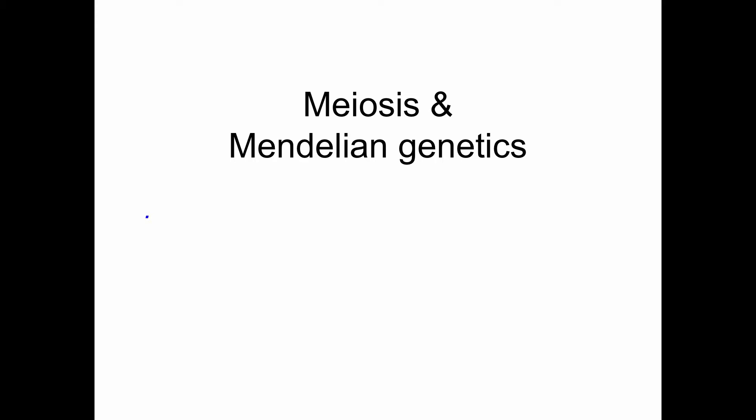If you recall, in our lecture in class, we talked about mitosis, which was cell division that happens in all body cells that divide. Meiosis is different, and meiosis only happens in sex cells. In humans, our sex organs are where we have our sex cells, which is where this process occurs.